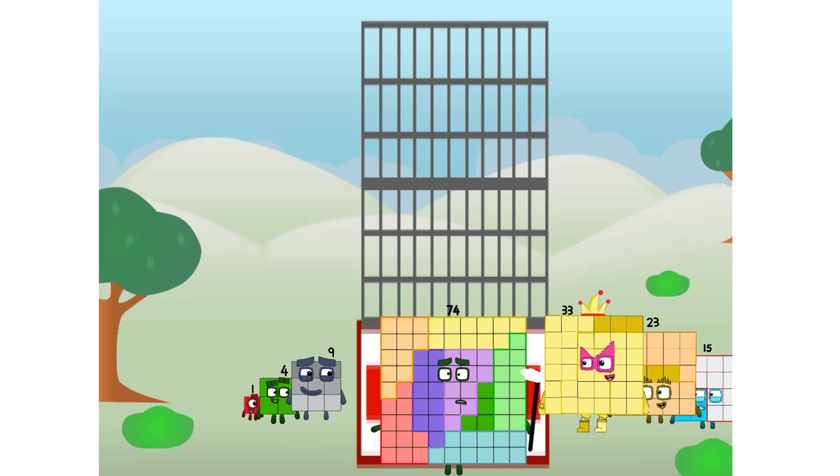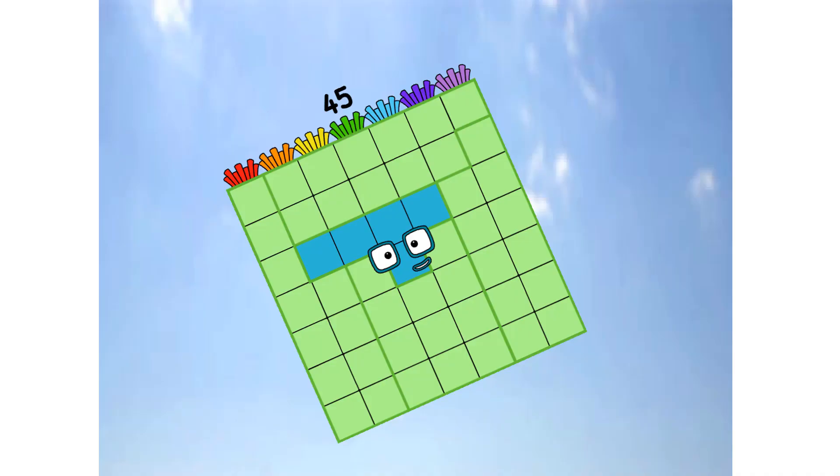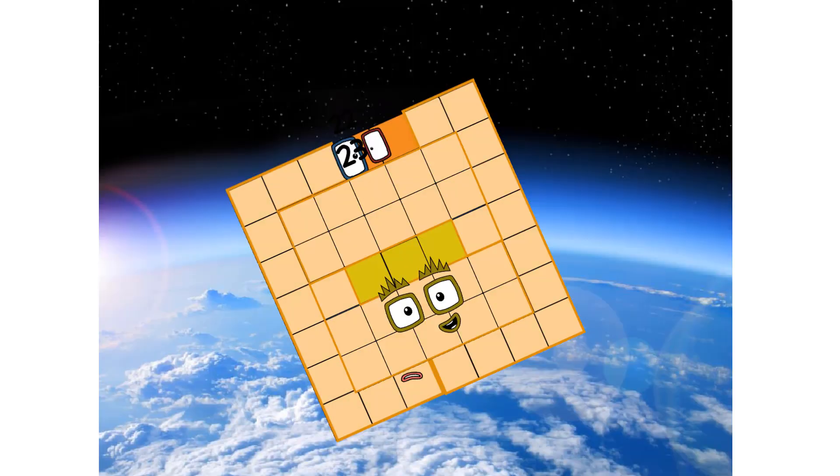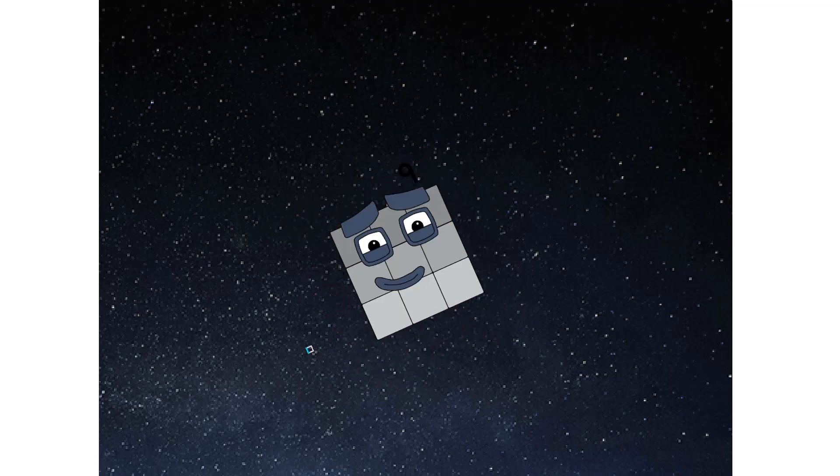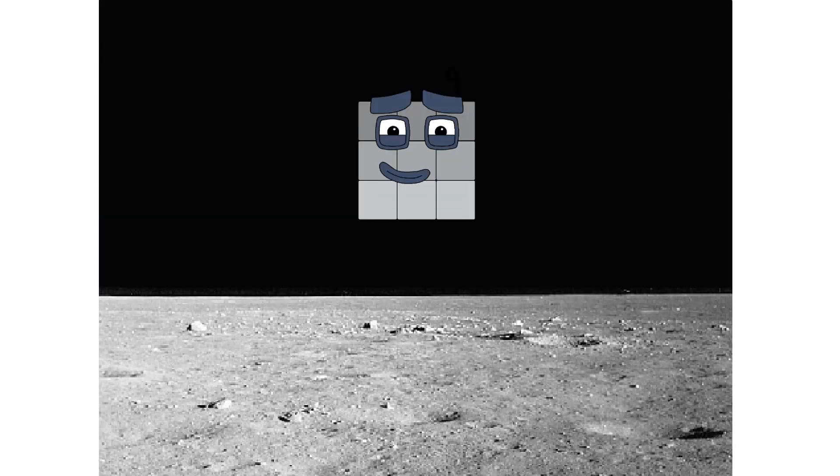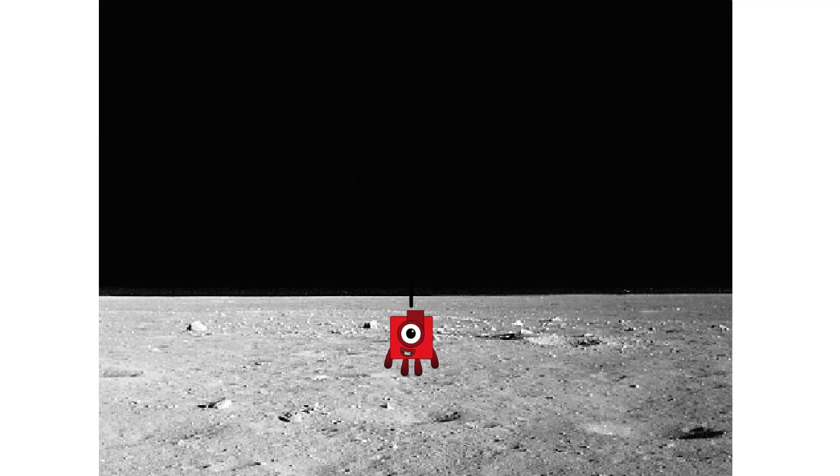Prepare for launch. We have liftoff. Primary launch stage completed. Engaging secondary stage. We've reached space. Second stage complete. Entering lunar orbit. Launching lunar lander. The square has landed.